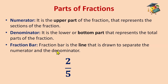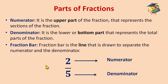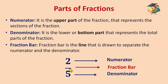Now let's see an example. This is two by three. Here, two is the upper part of the fraction — that is the numerator. The lower part is the denominator, and this line, this bar, is the fraction bar. So these are the parts of the fraction: the upper one is the numerator, the line is the fraction bar, and the denominator is the down part — the lower, bottom part.